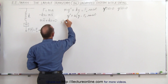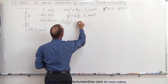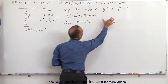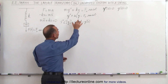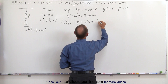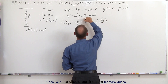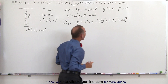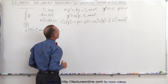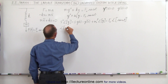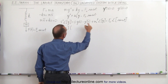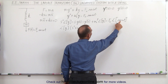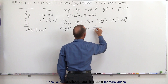We get s squared times the Laplace transform of y, minus s times y evaluated at zero, minus y prime evaluated at zero. Right away those two terms go to zero because of the initial conditions. Then we get plus omega sub-naught squared times the Laplace transform of y, equal to f sub-naught times the Laplace transform of sine of omega t, which is omega divided by s squared plus omega squared.